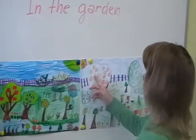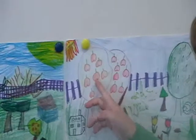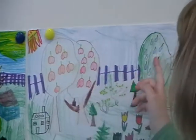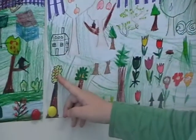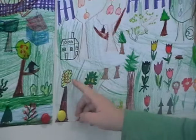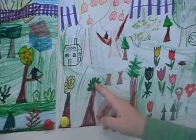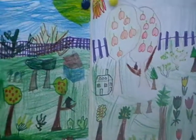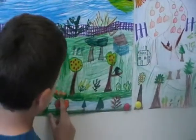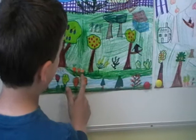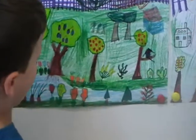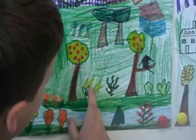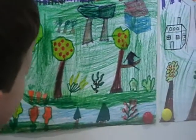There are apple tree, apple tree, plum tree, cherry tree, pear tree. There are one, two, three carrots. One, two, three, four beans.